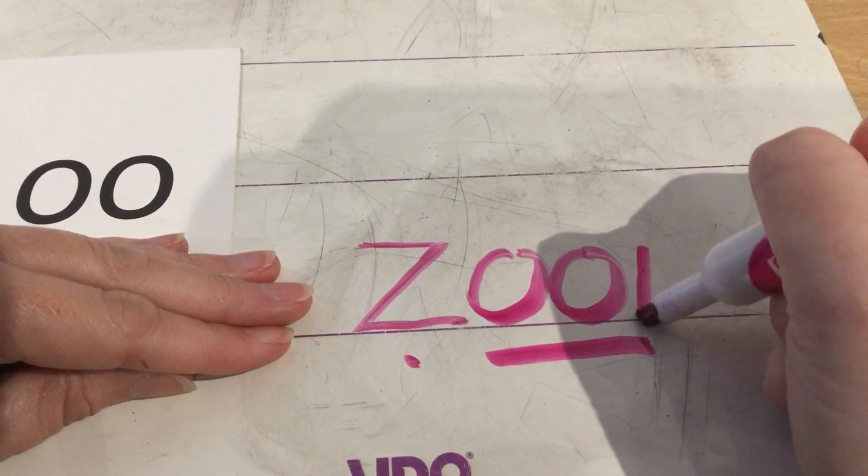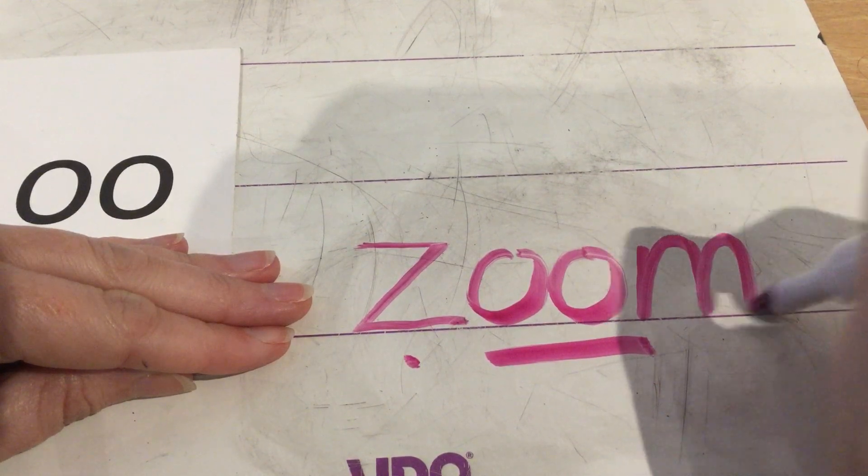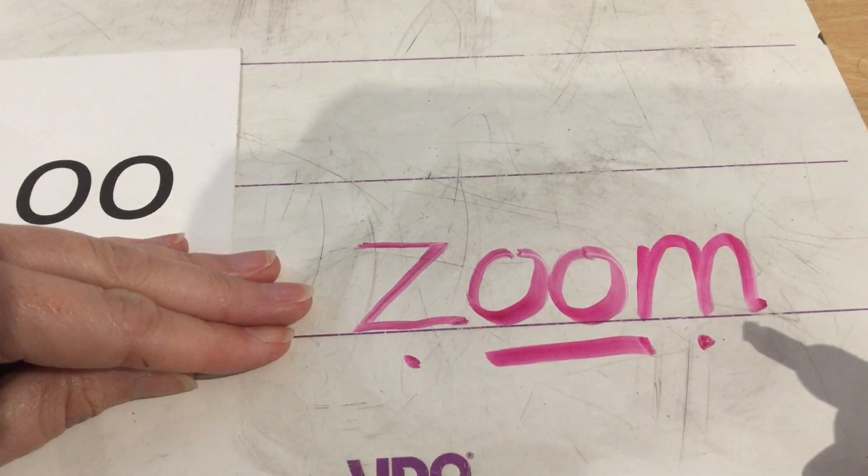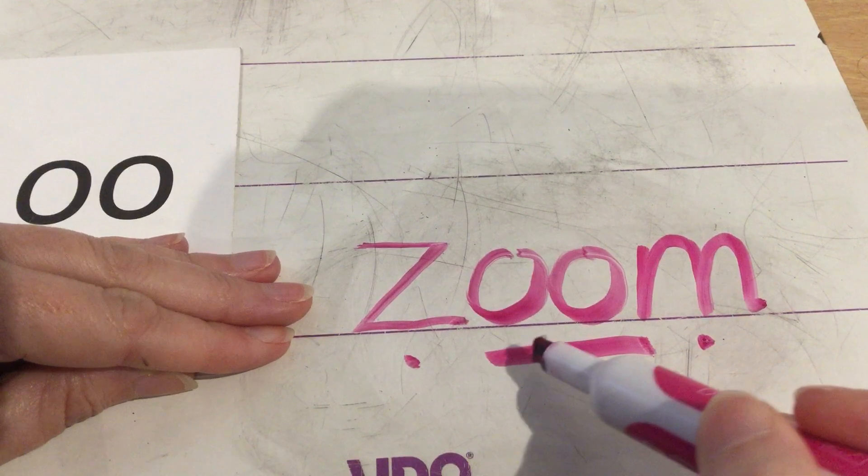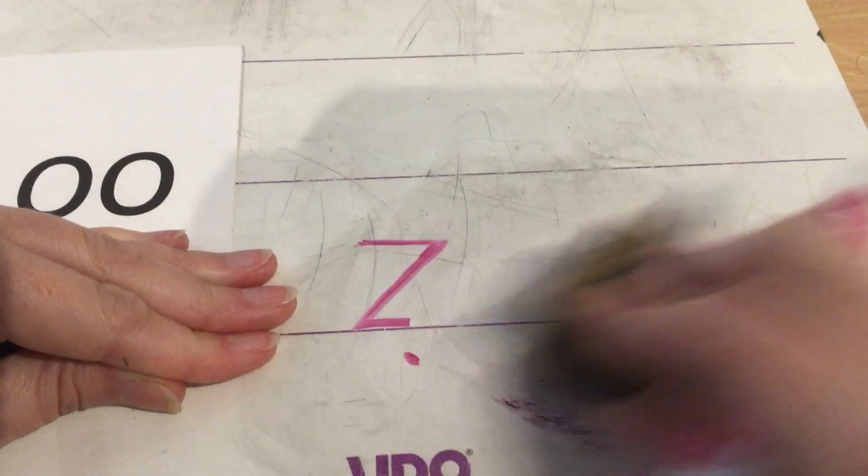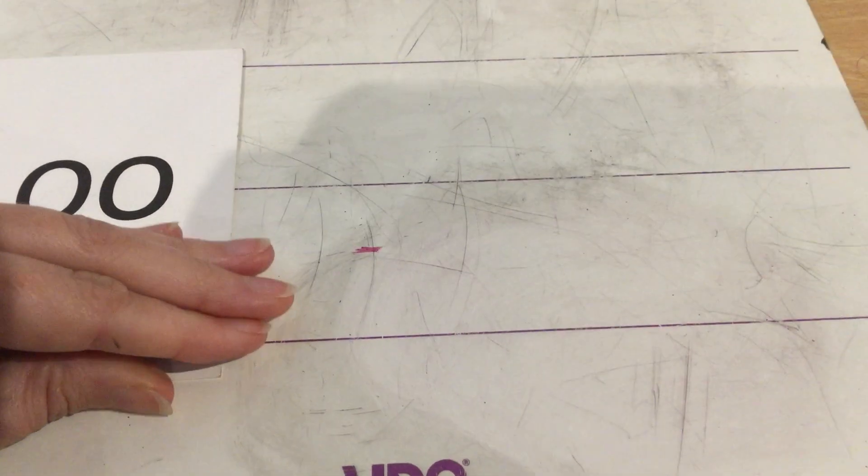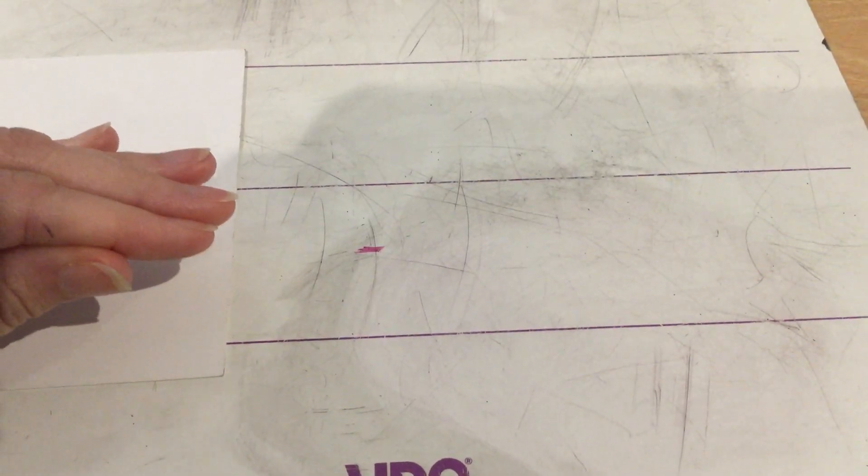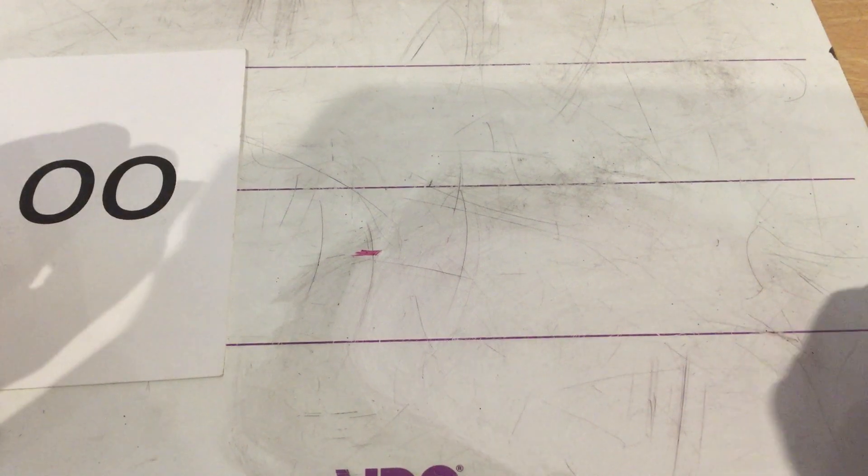What word would I make if I put M on the end? Z-oo-m. Zoom. Well done. I wonder if you can make any other words with zoo at the beginning. Let's try the next one.